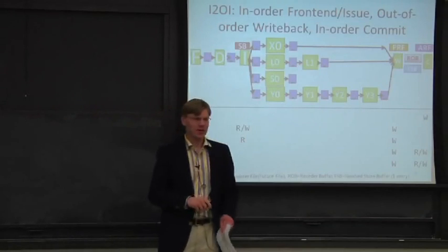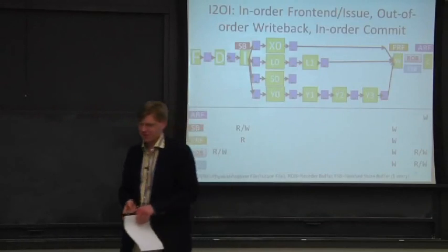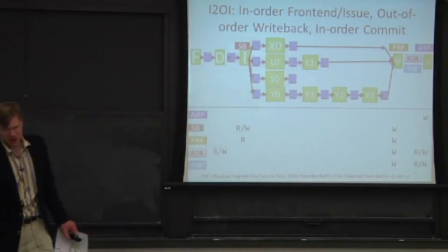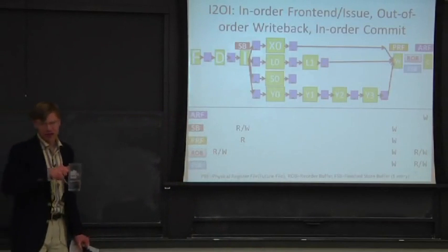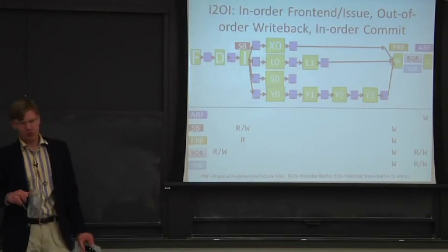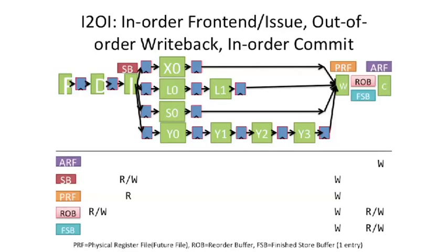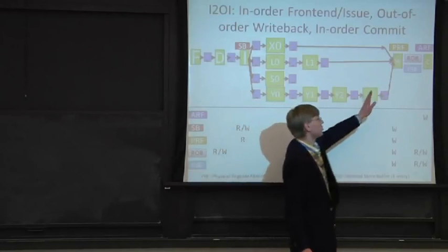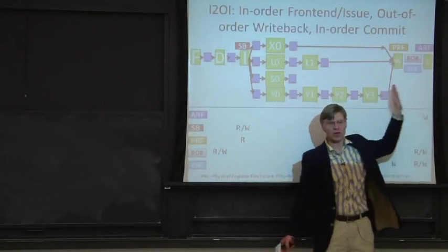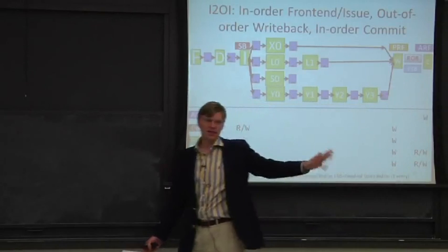We now move on to even more complicated processors: in-order front end, in-order issue, out-of-order write back, and in-order commit. This is going to solve some problems, most importantly the problem of precise exceptions. We can now handle exceptions at the end because we're committing data in order.